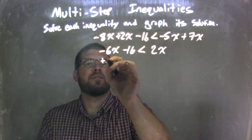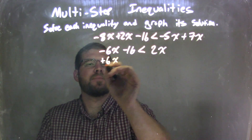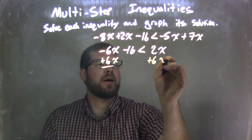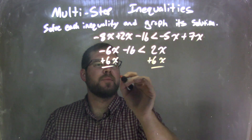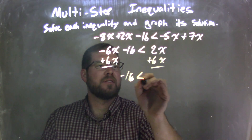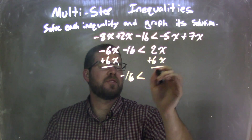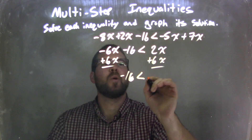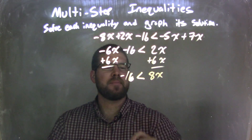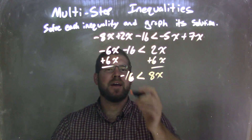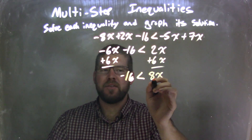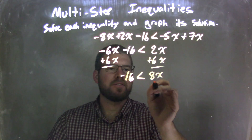Let's add 6x to both sides. I'm going to bring my x to the right. That leaves me with negative 16 on the left, is less than 2x plus 6x, which is 8x. Now I have negative 16 is less than 8x.